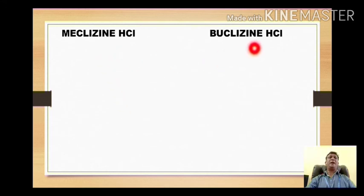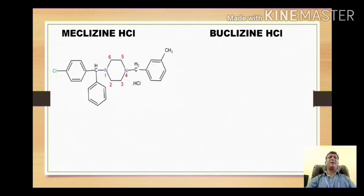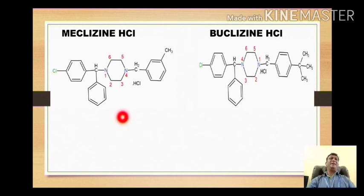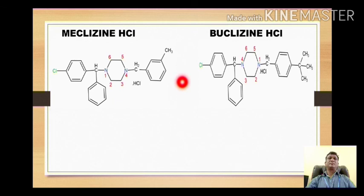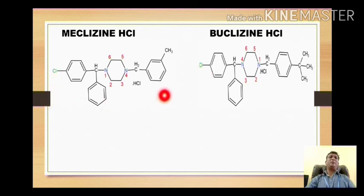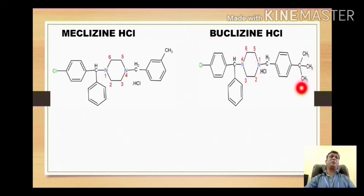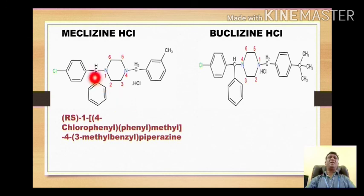The next drugs are meclizine hydrochloride and buclizine hydrochloride. Both compounds also belong to the chemical class of piperazine. Looking at their structures, a particular core structure is common. In the name, the 'CL' stands for the presence of chlorine. In meclizine, 'ME' stands for the methylphenyl nucleus, while in buclizine 'BU' stands for the presence of a tertiary butyl group along with the phenyl ring.